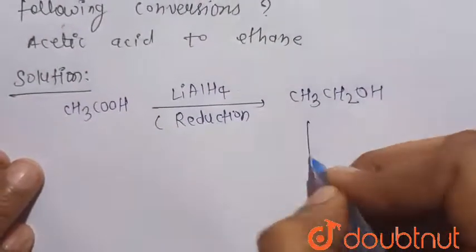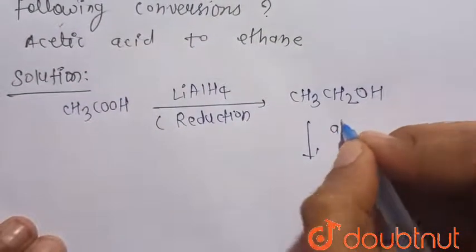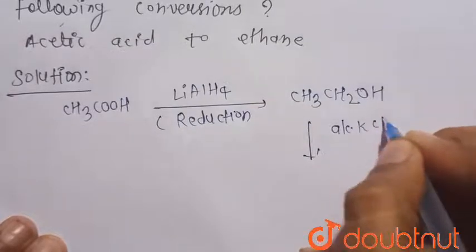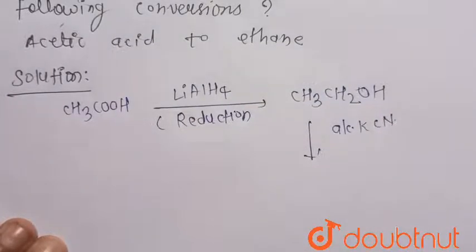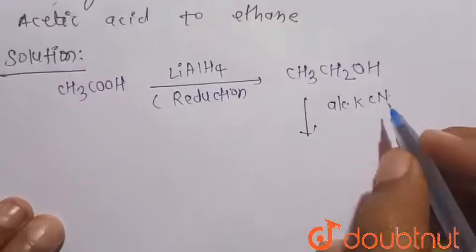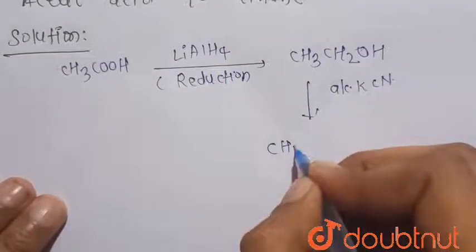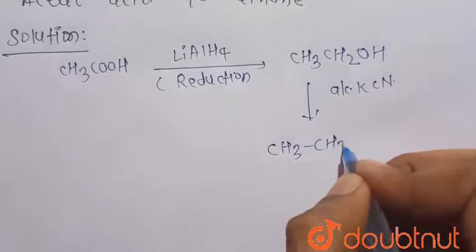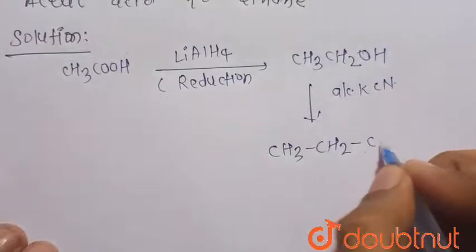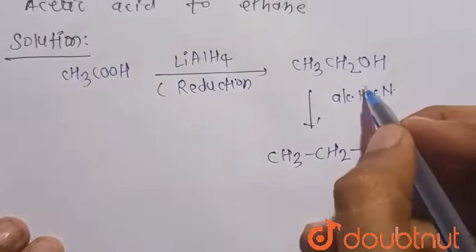Then ethanol is treated with alcoholic KOH. So there is the formation of CH3CH2CN. It will be a nucleophilic substitution reaction.